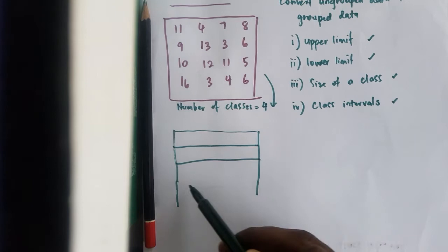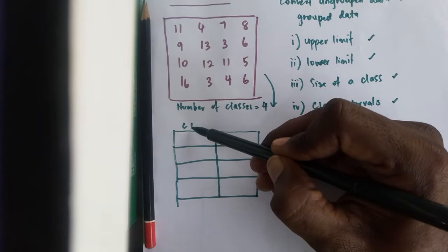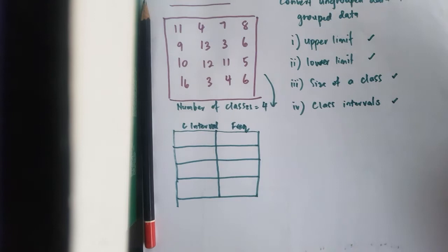This means you have 1, 2, 3 and 4 classes where you can divide it. And this will be your class interval. And this can represent your frequency.